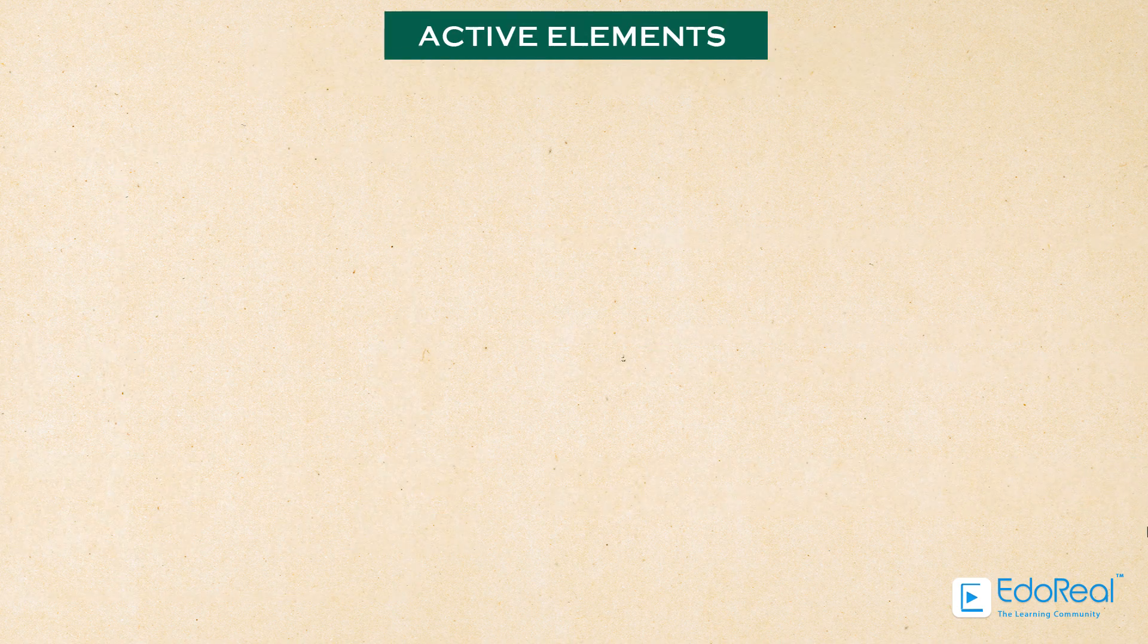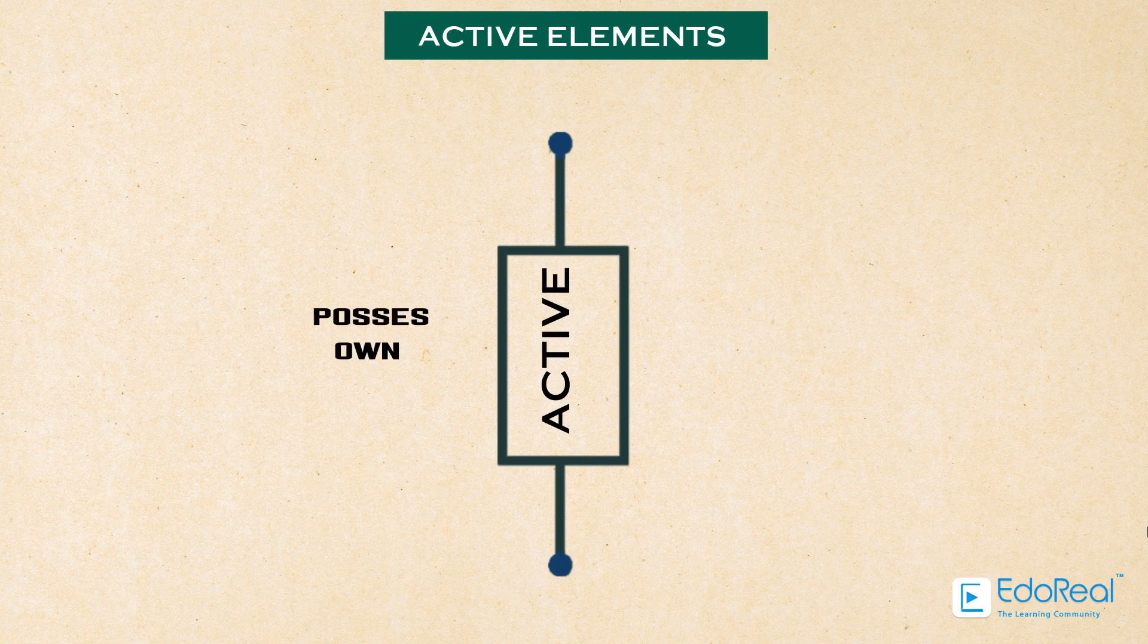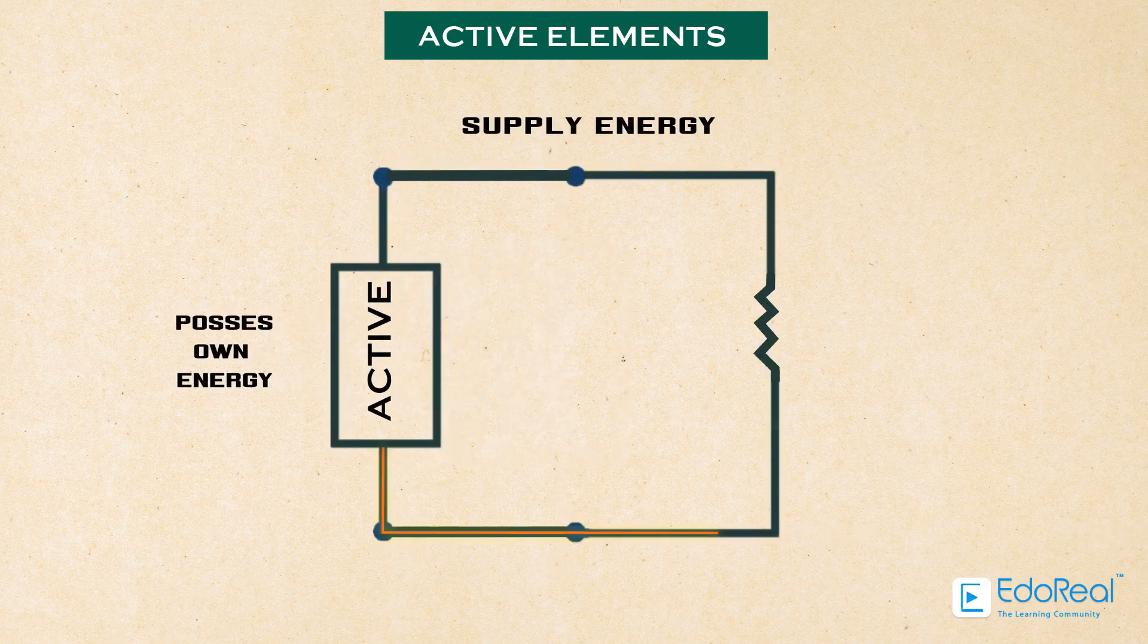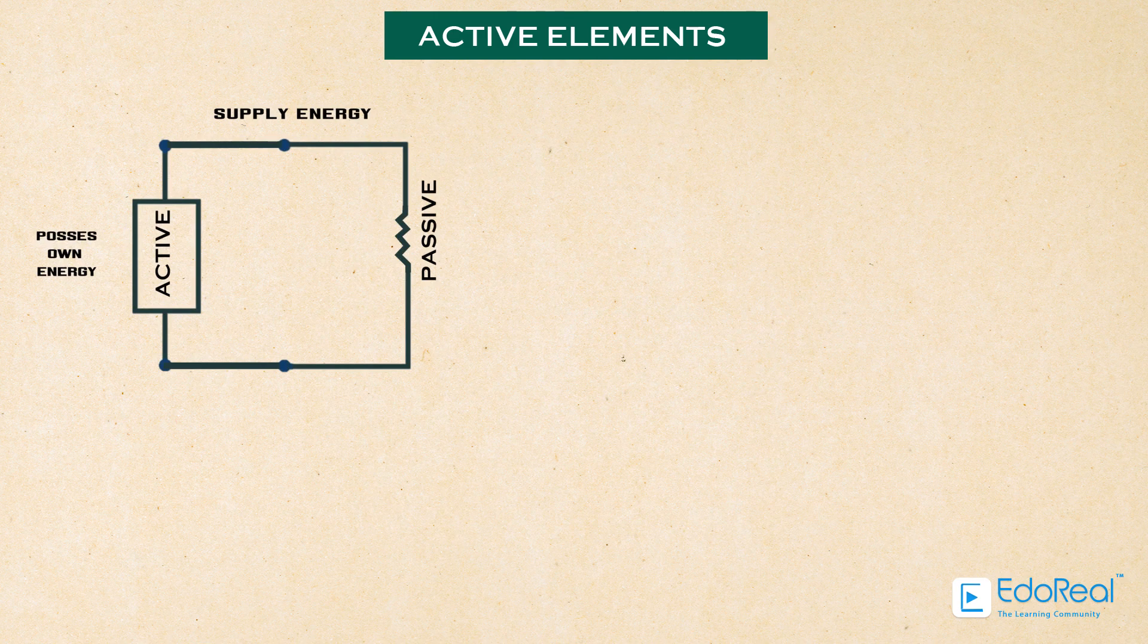Active elements possess energy of their own and can supply it to other elements of the circuit. Examples of active elements are voltage sources, current sources, and generators.